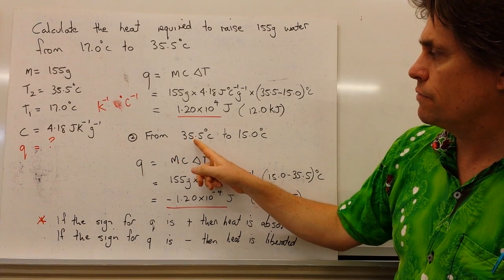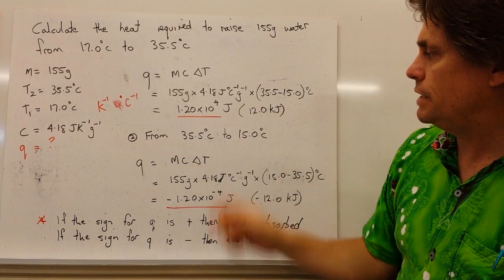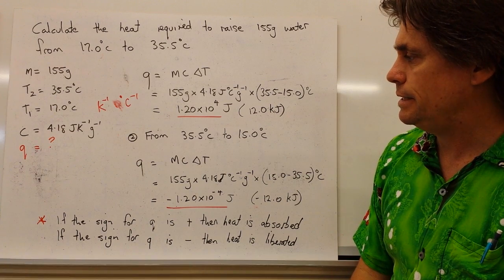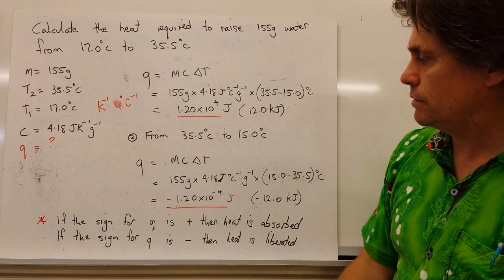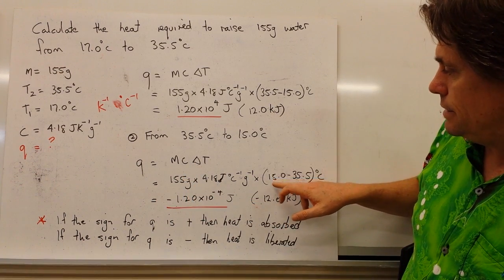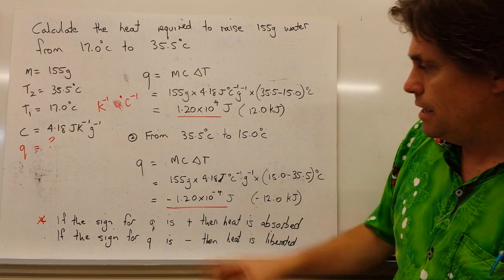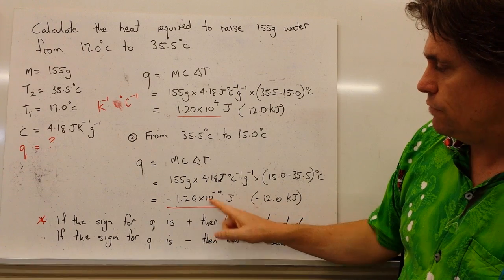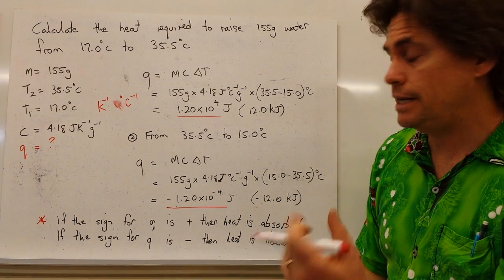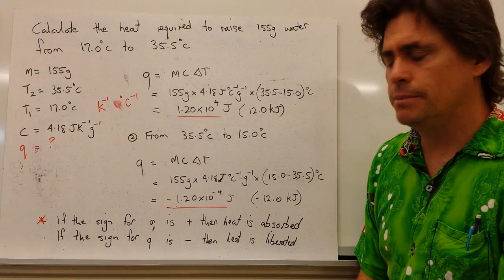Let's do a second part. This time we're going to go from 35.5 to 15.0 degrees C. Once again we've got the same question, but this time our numbers switch for our T2 and T1. And that gives us a negative value for our energy, or our heat energy. What does this mean?